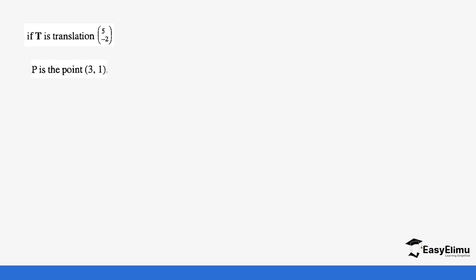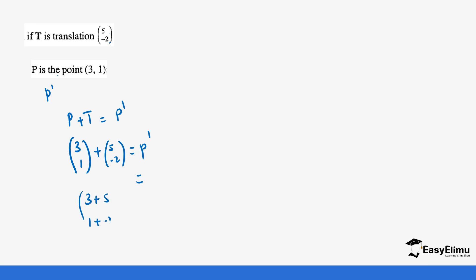Let's do a few examples. If you have been given the translation vector (5, negative 2) and the point P is (3, 1), what are the coordinates of the image P prime? We add P to the translation vector: (3, 1) plus (5, negative 2). That gives us 3 plus 5 equals 8, and 1 plus negative 2 equals negative 1. So the coordinates for P prime are (8, negative 1).